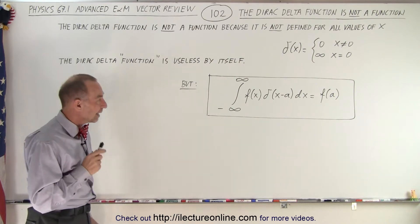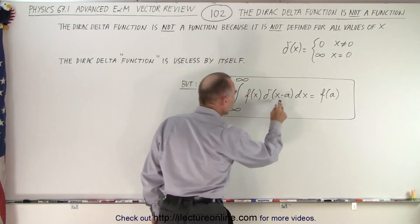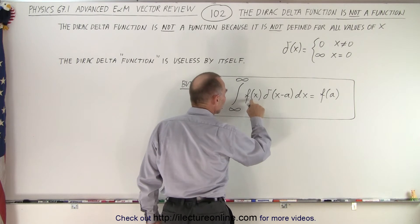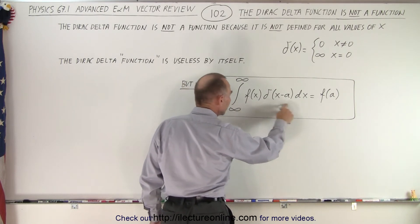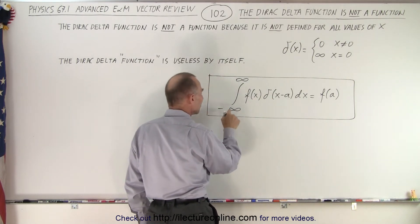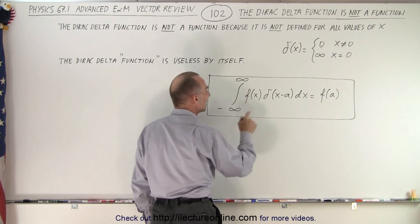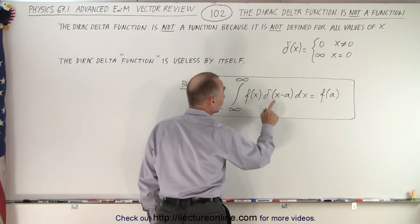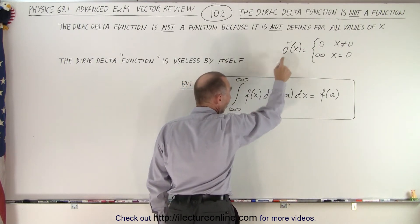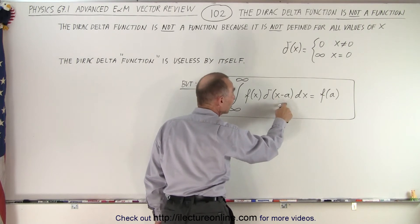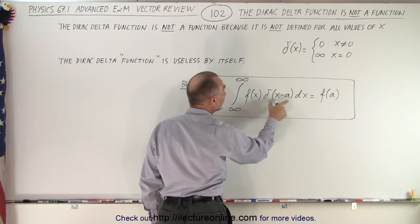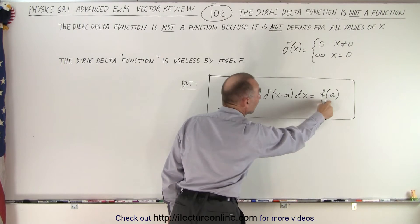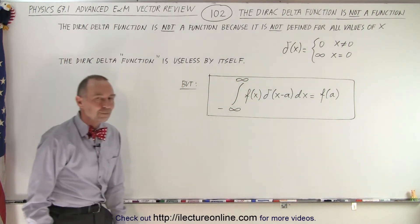But, if we then use it to multiply it with another function and put it as an integral, and integrate it from minus infinity to plus infinity, that by definition, now notice, instead of writing the delta function like this, we write it like this, x minus a.